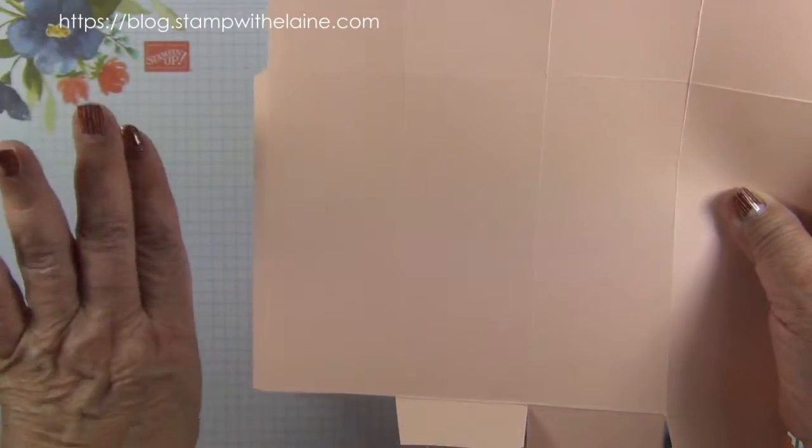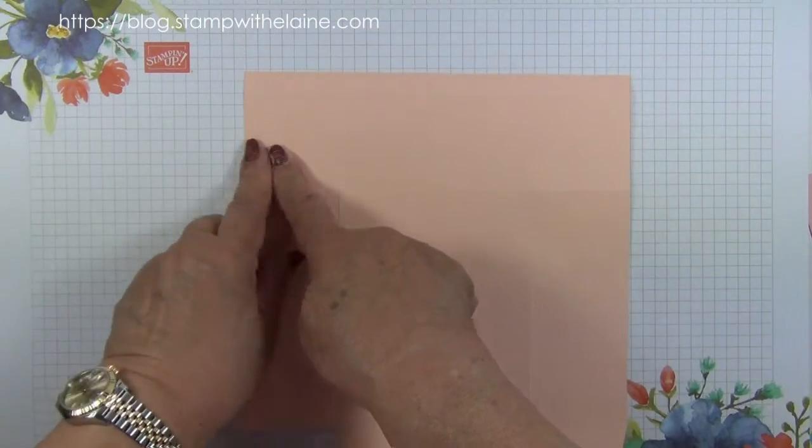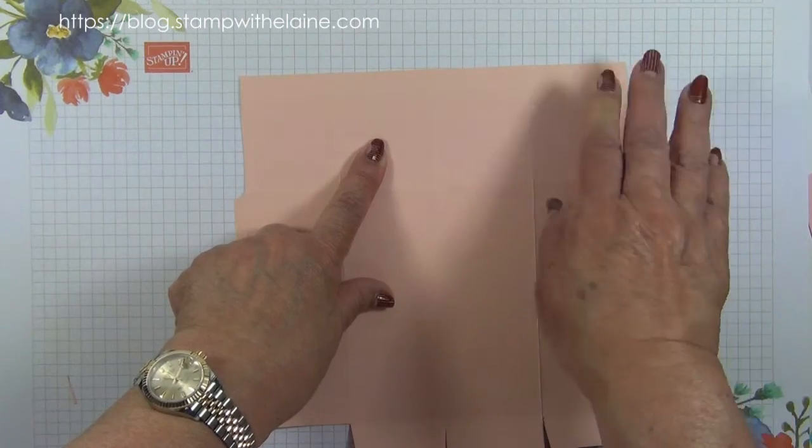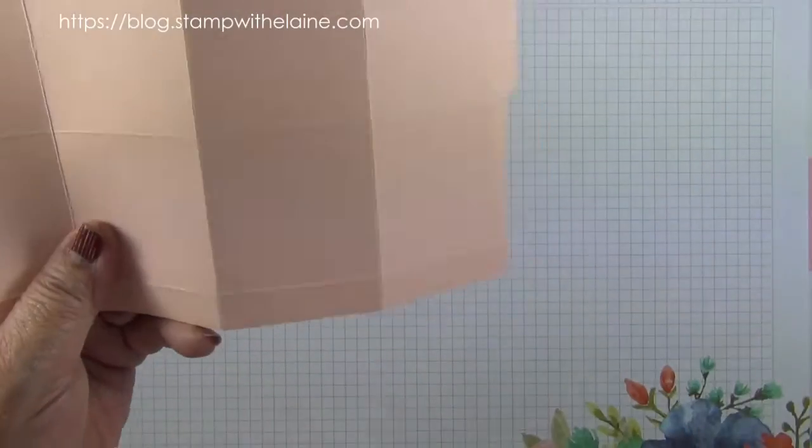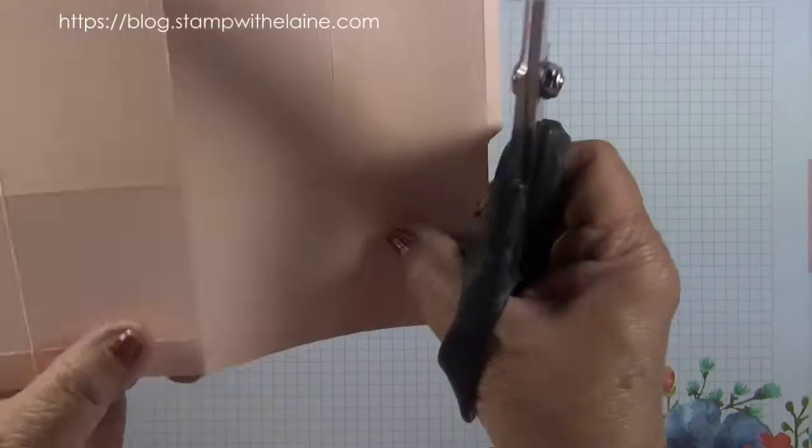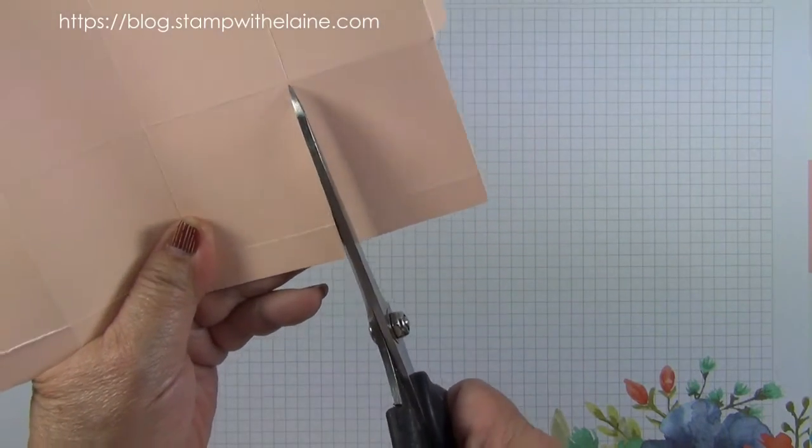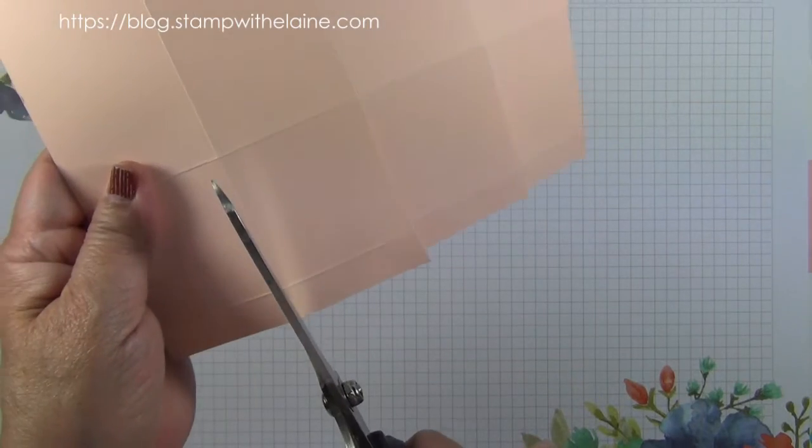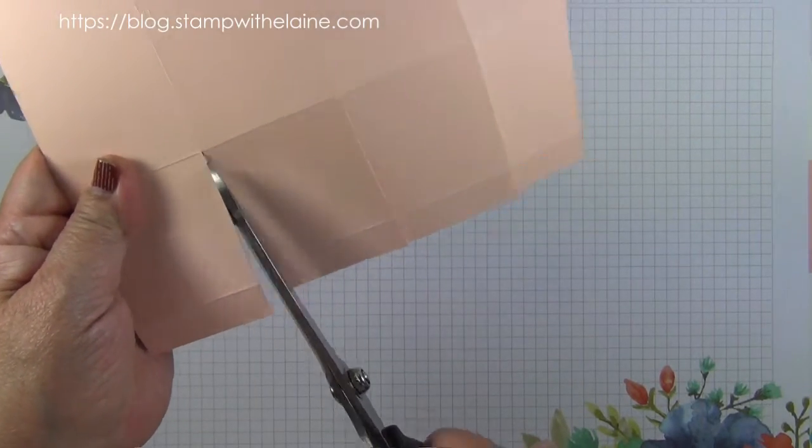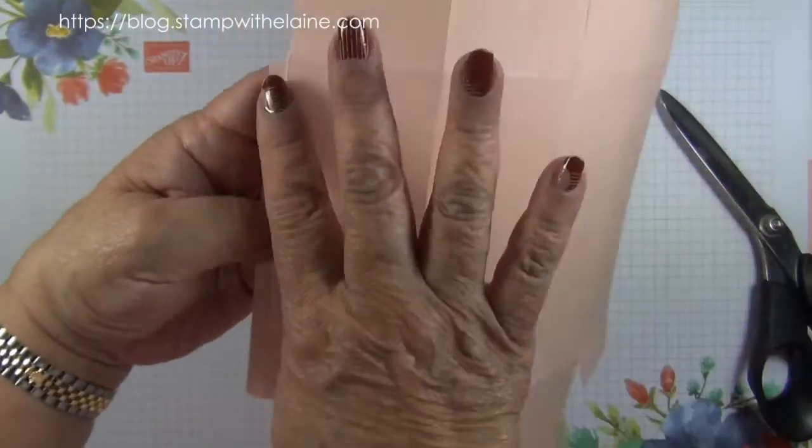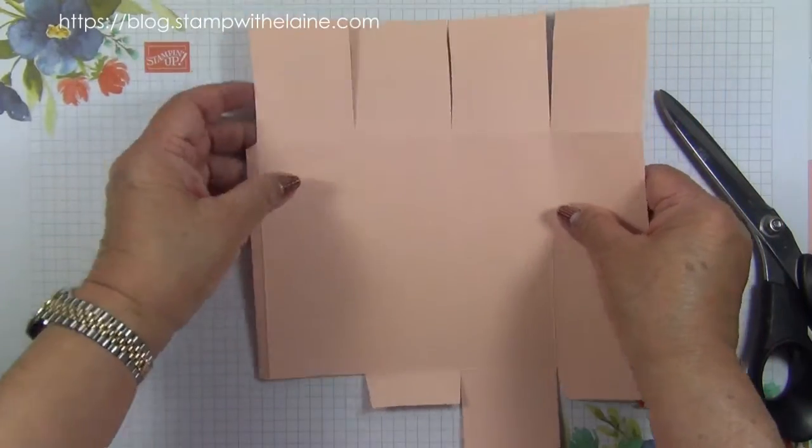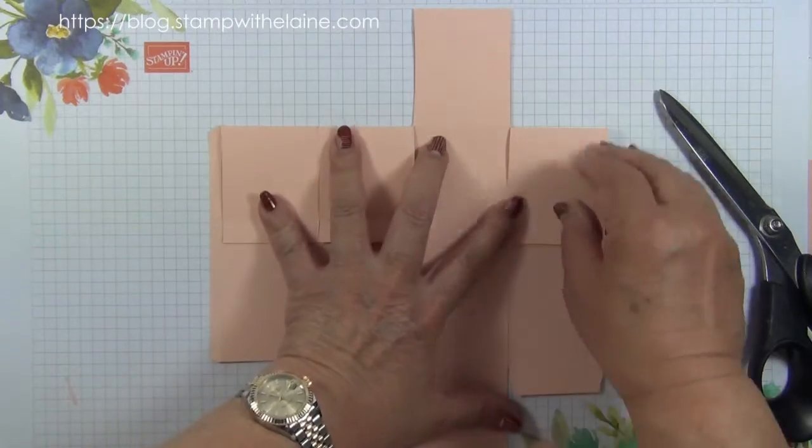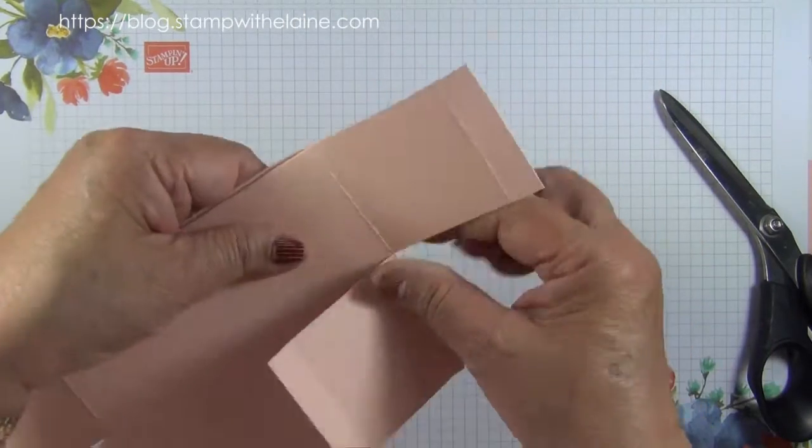The quarter inch tab is on your left still, so you want to keep that one, that one, skip that one, and keep that last panel. Now let's cut them all up to the second score line. The quarter inch panel is on your left, so we're keeping that one, that one, and that one on the end, but we're going to cut this one away.